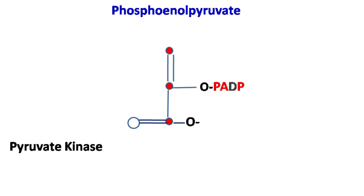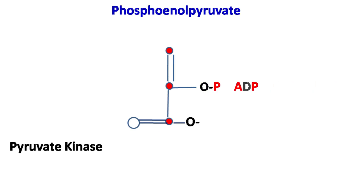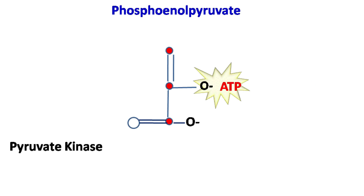And finally, pyruvate kinase converts phosphoenol pyruvate to pyruvate with the formation of ATP.